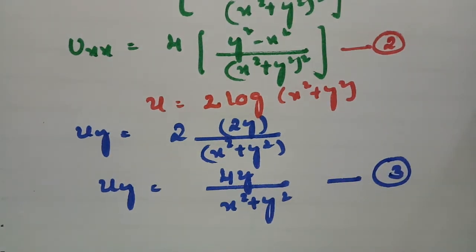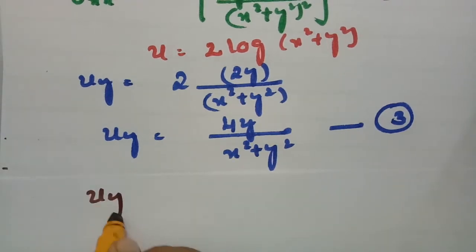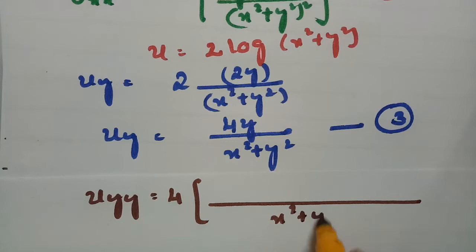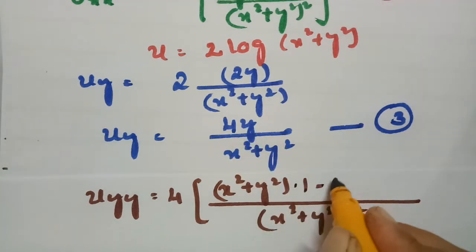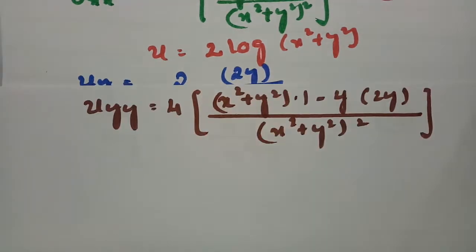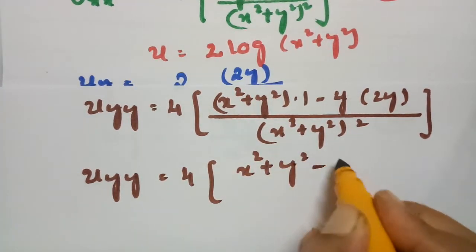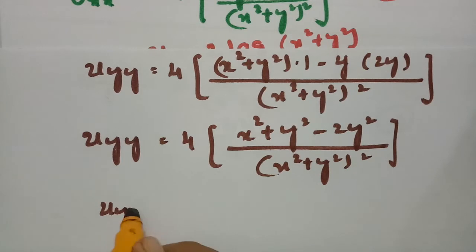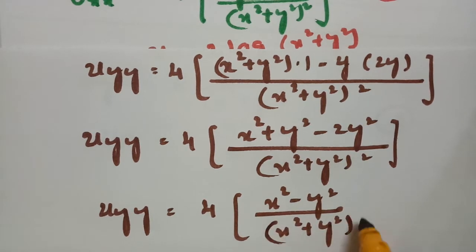Now I have to make a double derivative with respect to y. uyy: differentiating again with respect to y using the quotient rule, taking 4 common, the denominator is x square plus y square whole square. The numerator derivative gives 1, and 2y for the y term. So uyy equals 4 times of x square plus y square minus 2y square, divided by x square plus y square whole square. This simplifies to 4 times of x square minus y square divided by x square plus y square whole square. This is equation number 4.